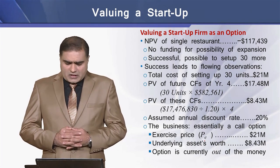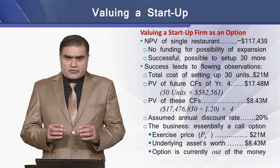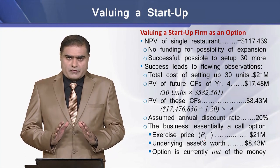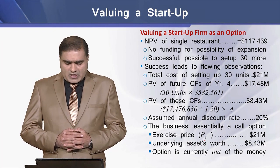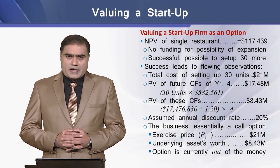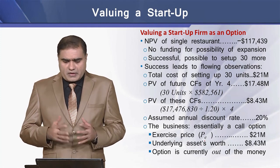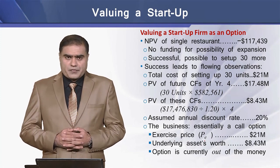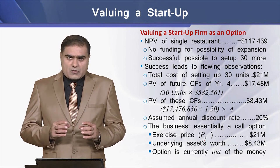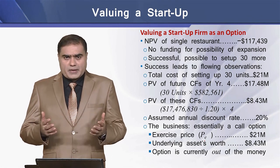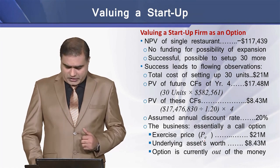This means the business is essentially a call option with an exercise price of $21 million and an underlying asset worth of $8.43 million. This option is apparently out of the money because of the negative NPV earned by the first project.